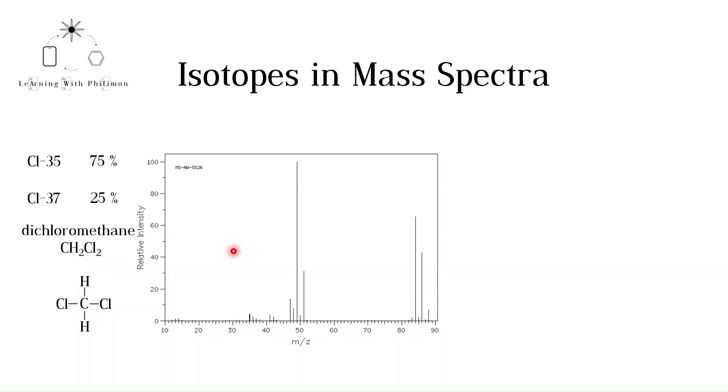To explain this mass spectrum, we need to do some mathematics. There are three possible combinations of chlorine isotopes. A molecule could have two Cl35 isotopes, as seen here. This molecule would have a relative molecular mass of 84.